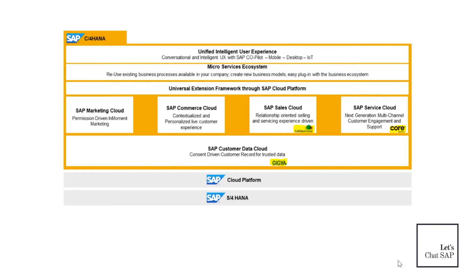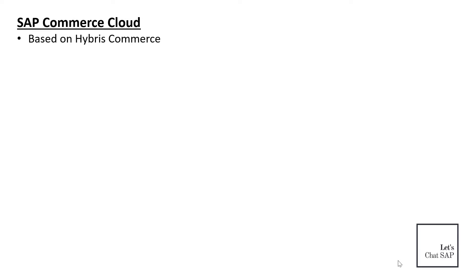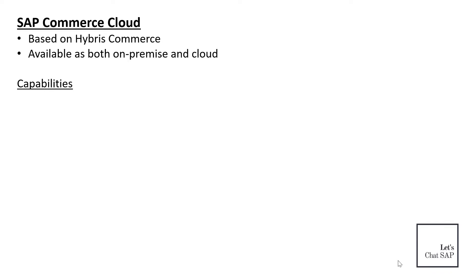Now let's look at the different products in the C4HANA suite. The first is SAP Commerce Cloud, based on what was previously known as SAP Hybris Commerce. It is available as both cloud and on-premise model. It is an omnichannel e-commerce solution that enables organizations to ease the buying process by offering the best possible functionalities from search to sales, providing an omnichannel responsive storefront that promotes consistency across all devices.